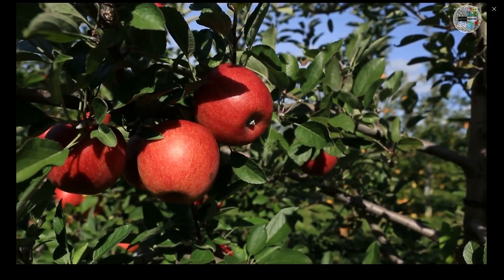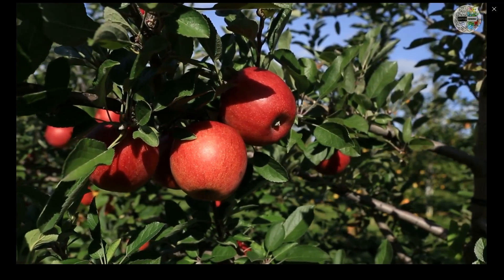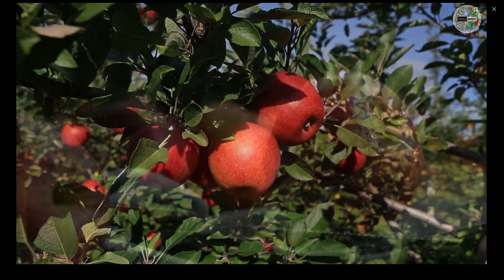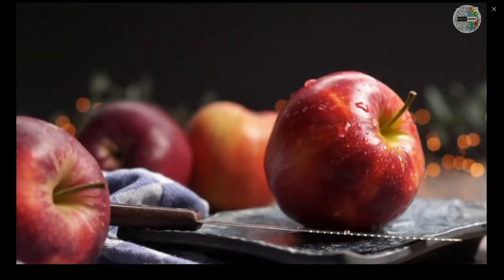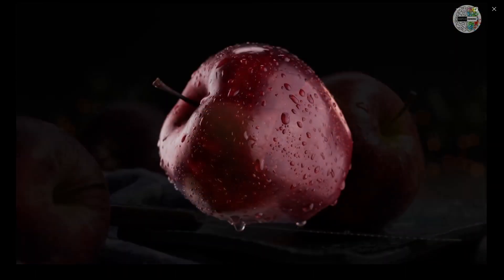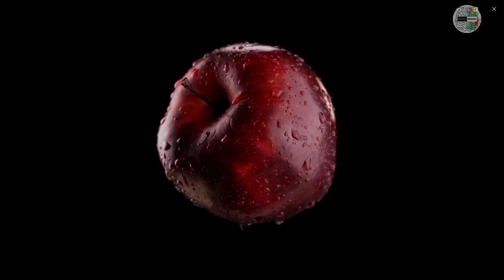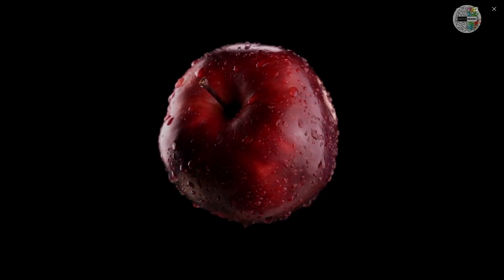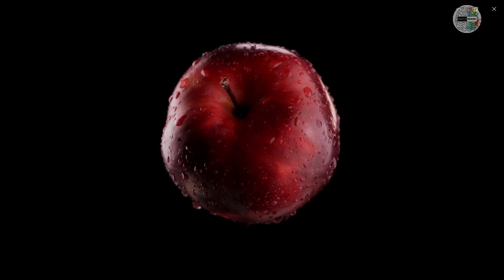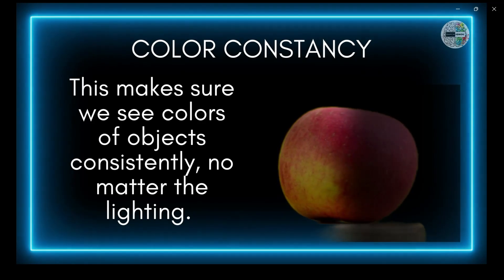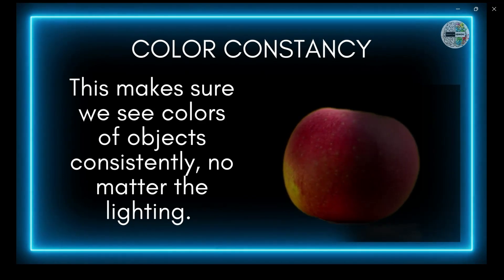Imagine you look at a red apple in bright sunlight, then later in the evening when it's dimmer — your brain still sees it as red even though the lighting has changed. That's perceptual constancy at work. There are three types. Number one: color constancy. This makes sure we see colors of objects consistently no matter the lighting, so that red apple looks red whether in the sun or under a lamp.